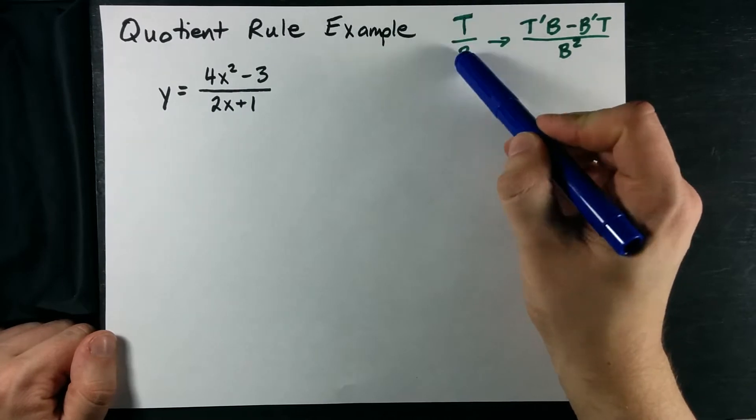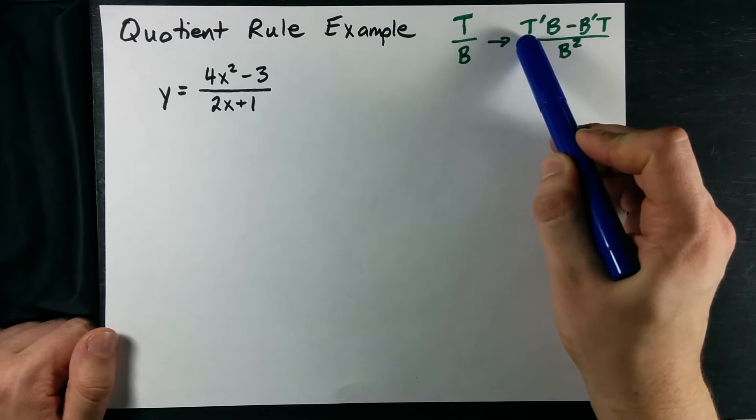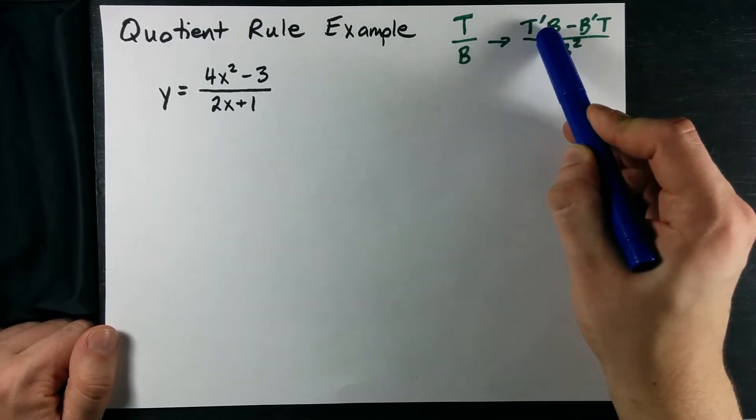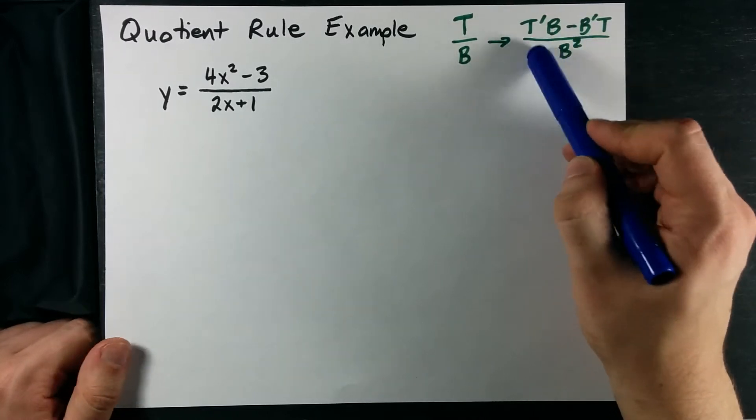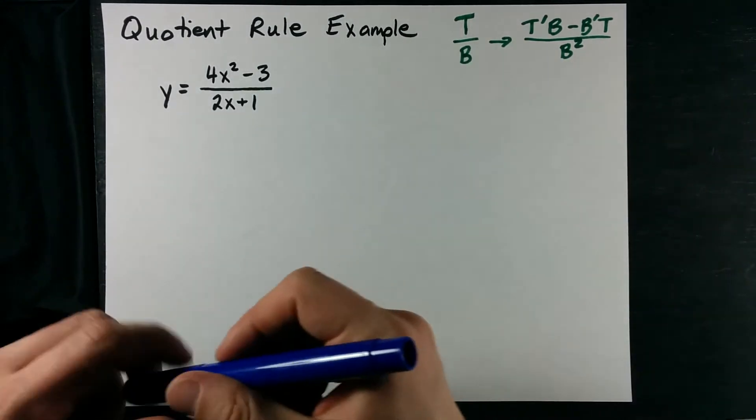I like to do top over bottom. I mean T for top and B for bottom. The derivative of the top happens first. Remember that. Derivative of the top times bottom, then subtract derivative of the bottom times the top. The bottom squared goes in the new bottom, but you'll probably remember that.